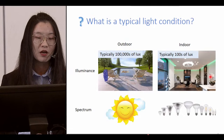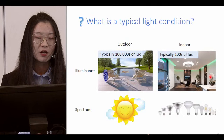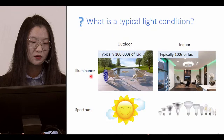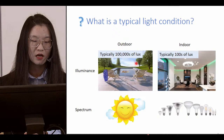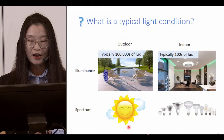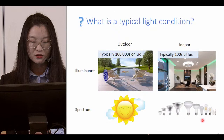First, we look at what constitutes a typical light condition. There are huge differences between outdoor and indoor light conditions, characterized by illuminance and spectrum. Outdoor illuminance is typically hundreds of thousands of lux, while indoor illuminance is typically only hundreds of lux. The outdoor spectrum is the spectrum of sunlight, but indoors the spectrum changes depending on the light source type.